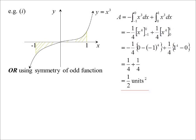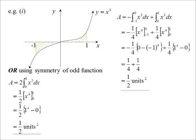The other way is to recognize it's an odd function. The area above must be the same as the area below, so I could do twice the integral from zero to one. Once again we get one half square units, which is fine if we have that symmetry.